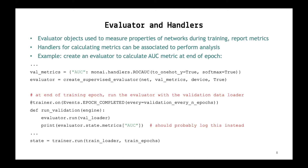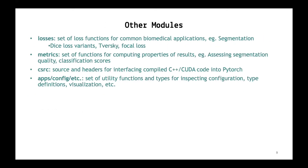So far we've chatted about networks created with MONAI and the blocks that come with it, workflows, and evaluators and handlers. Inside MONAI we also have a couple of other modules — for example, losses, where you can get your dice loss and similar functions. There are metrics so you can assess the quality of your networks. There's C source, which is where MONAI keeps all of its interfacing to CUDA code — hopefully you won't have to delve too deeply into that. And then there's config, visualization, and other utilities.